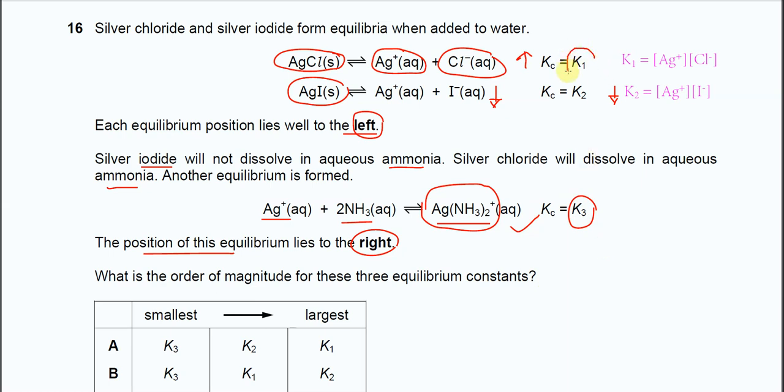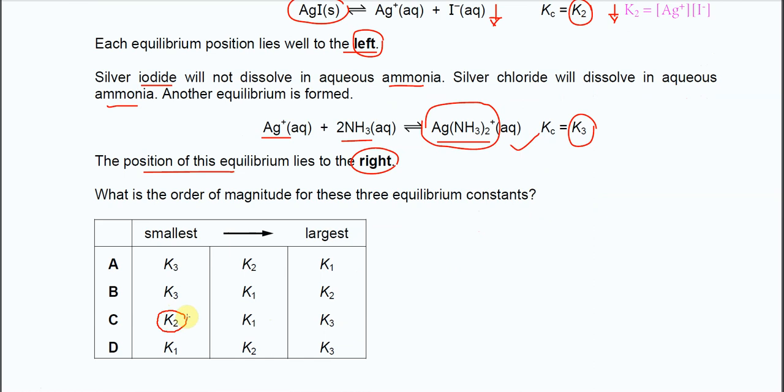The order is K3, then K1, then K2. The smallest is K2, then K1, then K3. So the answer is C. That's all, thank you.